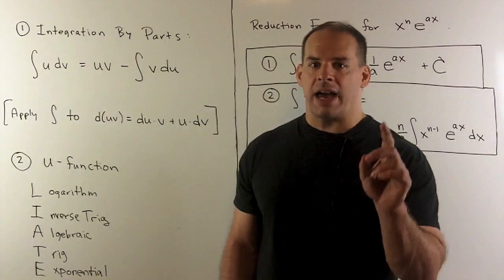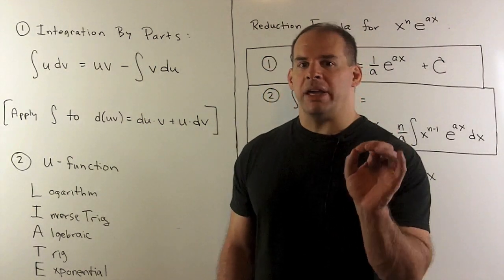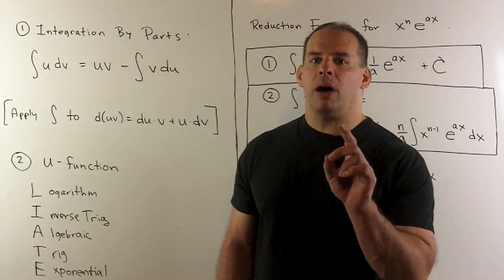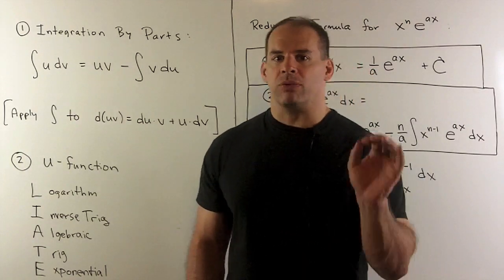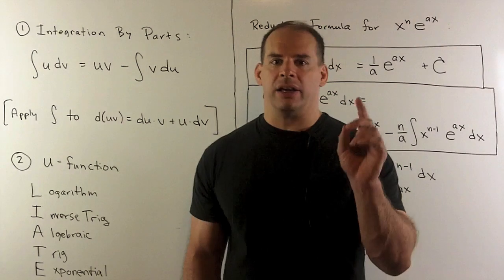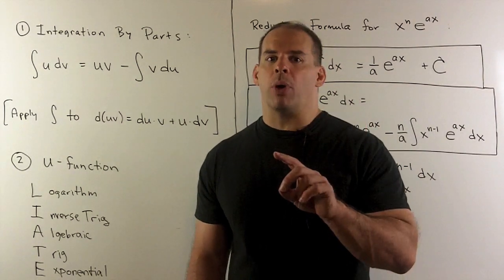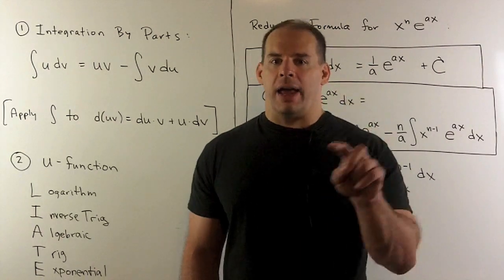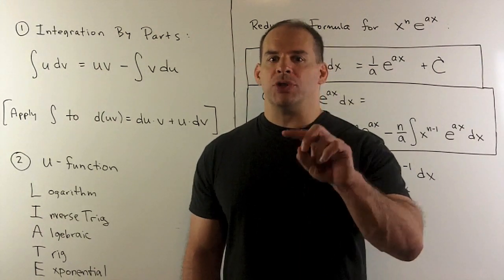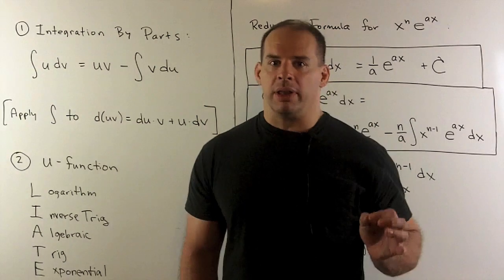Third method, the tabular method. This will be our quickest method, but we need to practice to get good with it. Finally, we have reduction formulas. The idea here, we need to do only one integration by parts. Then, to get any of our answers, we just have to do a repeated application of the formula that comes out.